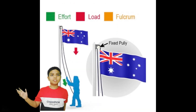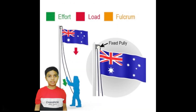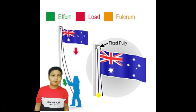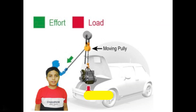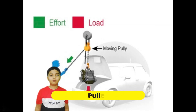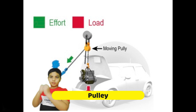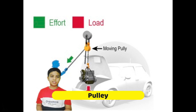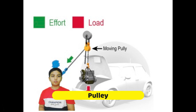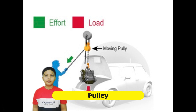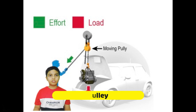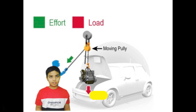The next type of machine is a pulley. A pulley is a grooved wheel with a rope. In villages, people use this to take out water from their wells. It's mostly used to lift heavy loads, and it is also used in elevators.